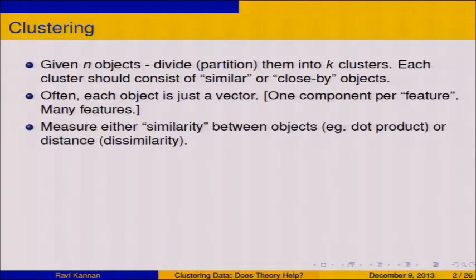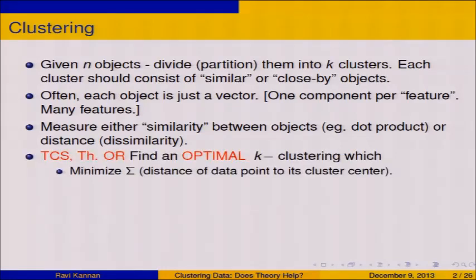We could measure either the similarity between objects — for example, if they are vectors, dot product is a notion of similarity, or cosine of the angle is another notion of similarity — or we could measure distance, dissimilarity. Most of the talk will measure distances, and these are just pure Euclidean distances. They are vectors in space, and the distances are just Euclidean distances.